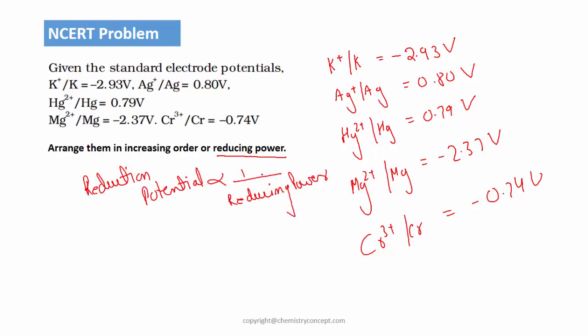We can see here that silver has highest reduction potential, so it will have least reducing power. So we arrange them like this: silver, and after silver comes mercury, after mercury we get chromium.